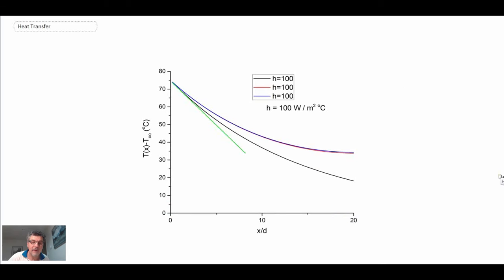So this is the result of that. And what we have here, we have three different cases. The first one, you won't see it here, but this was for the long fin. So that is black. And then we had the convecting tip. And then finally we had the insulated tip.